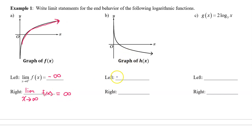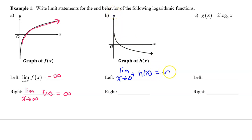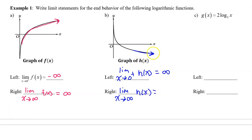Part B: For the left-end behavior, say the limit as x approaches zero from the right of h of x. As x approaches zero from the right, h of x approaches positive infinity, so this limit equals positive infinity. For the right-end behavior, begin the limit as x approaches positive infinity of h of x. On the right, h of x is falling, so this limit equals negative infinity.